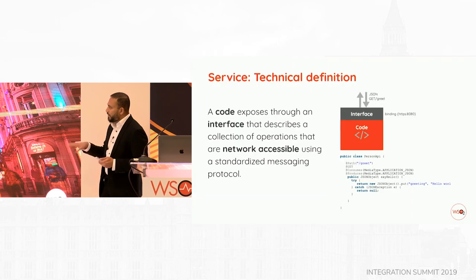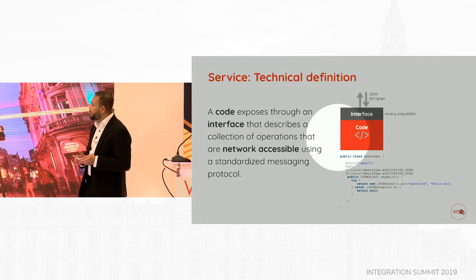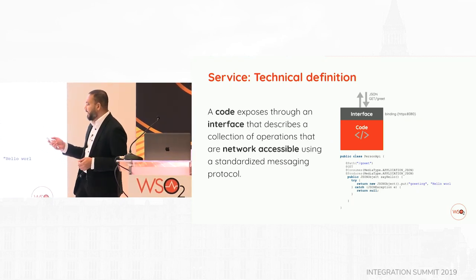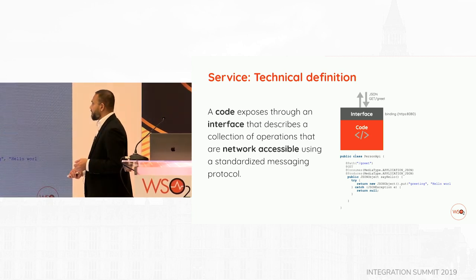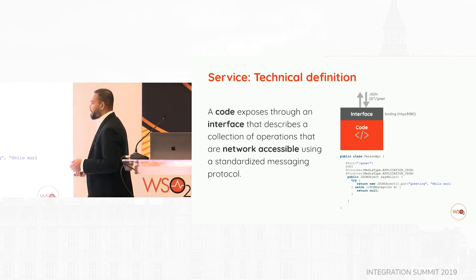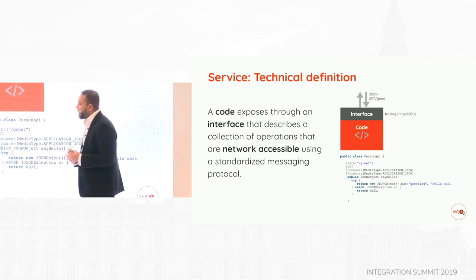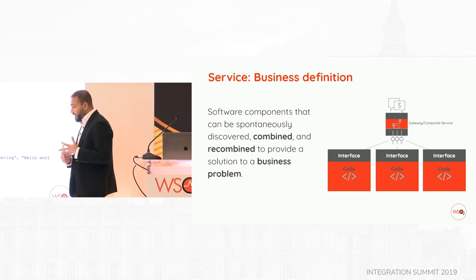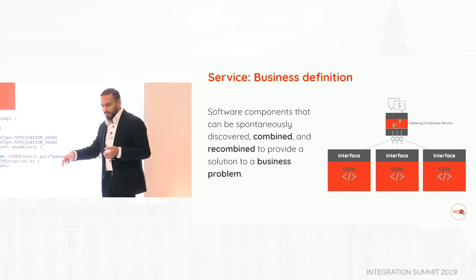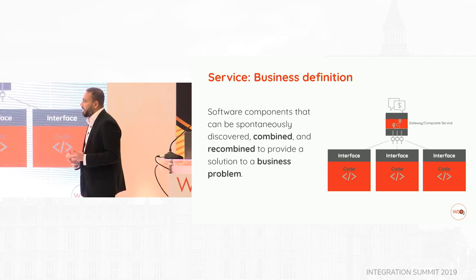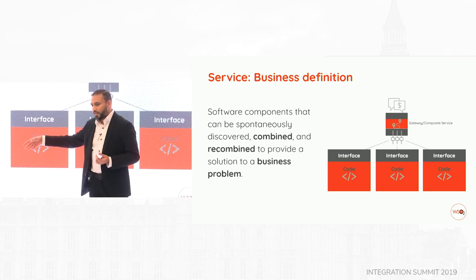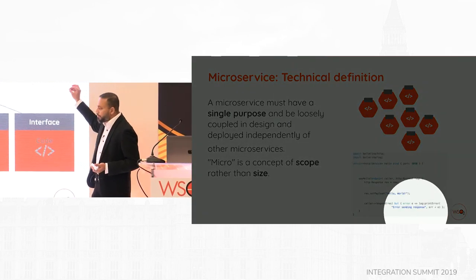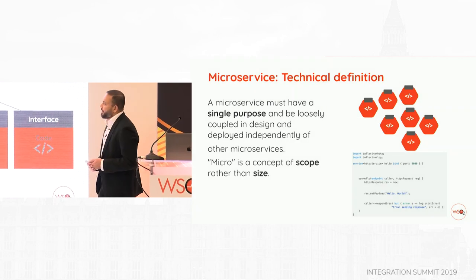While talking to customers we identified a misalignment between business expectations and technical implementation in services. A service is just a set of code — a network-accessible interface callable via a specific protocol like HTTP or gRPC bound to some message. But the business expectation of a service is different: it asks for a solution to a business problem. When you try to provide that, you need to connect services — that's where composite services and gateways came into our architecture.